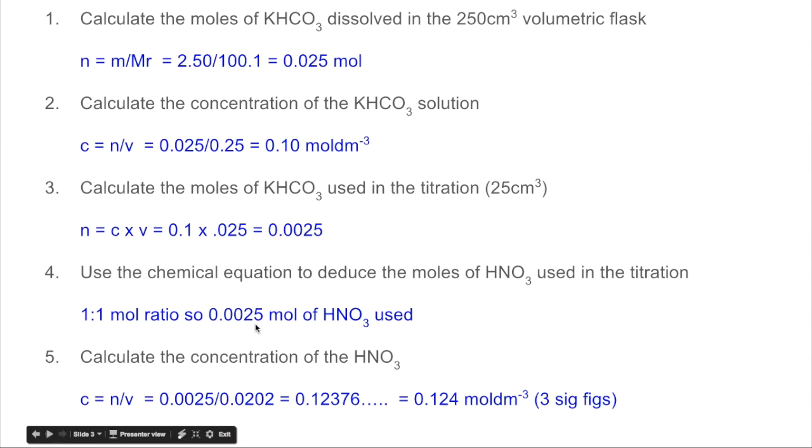And as a concentration, it's the moles divided by the volume used in the titration. So for the acid, that was remember 20.2 cm³, which is that many dm³. So we're getting a calculator value like this. And to three significant figures, that's 0.124.